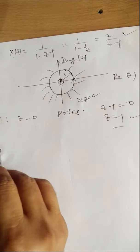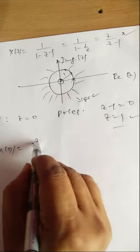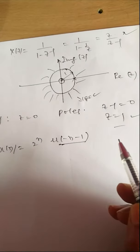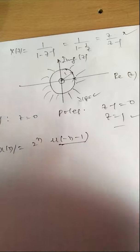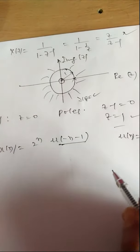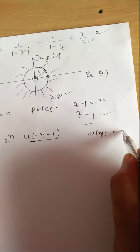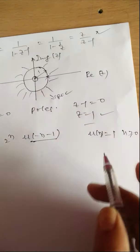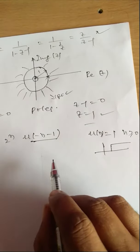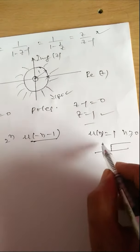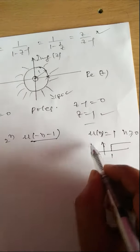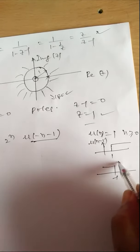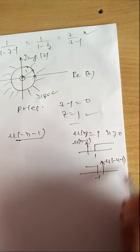Fifth problem: X(n) = 2^n · u(-n-1). The signal u(-n-1) exists from n = -1 to -∞. U(n) has value 1 for n ≥ 0; u(n-1) exists from 1 to ∞. Because of the minus sign, you take the reflection of that signal, so u(-n-1) exists from n = -1 to -∞.